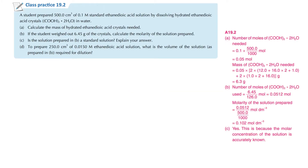Now have a look at class practice 19.2. A student prepared 500 cm³ of 0.1M standard ethanedioic acid solution by dissolving hydrated ethanedioic acid crystals in water. Note: hydrated means with water, not without. So this one is dissolving a solid to prepare a standard solution.